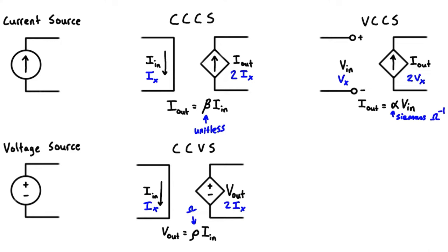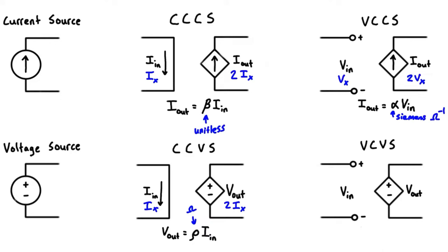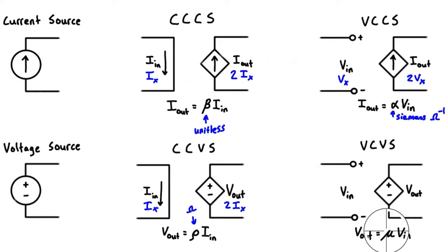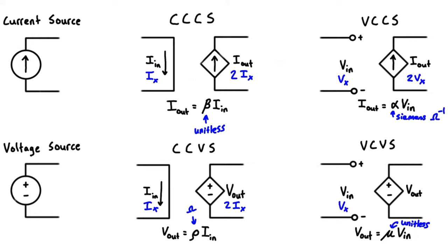The last variation is the voltage controlled voltage source (VCVS), again using a diamond shape. The dependent voltage is controlled by a voltage somewhere else in the circuit, so the expression is: dependent voltage equals our multiplying factor times our controlling voltage. If you rearrange to solve for the multiplying factor, it's unitless — just voltage divided by voltage. People like to use the letter mu for this one. Often you won't even see these Greek letters in problems; you'll just be given something like 2vx as the dependent voltage.